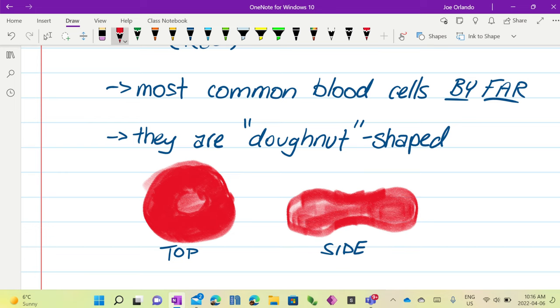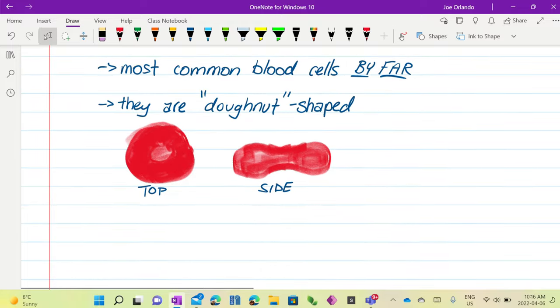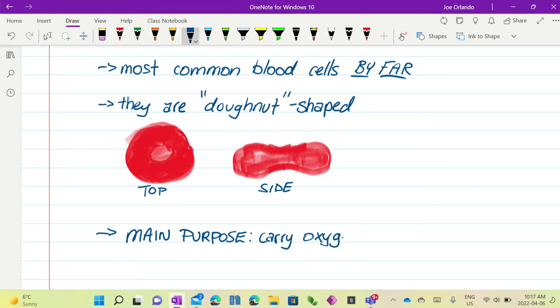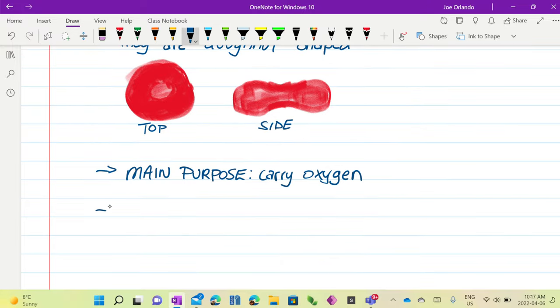So tell me, what do red blood cells do? They're the most common blood cell by far, so its purpose is obvious. What do they do? You are good. Exactly right. Their main purpose is to carry oxygen.